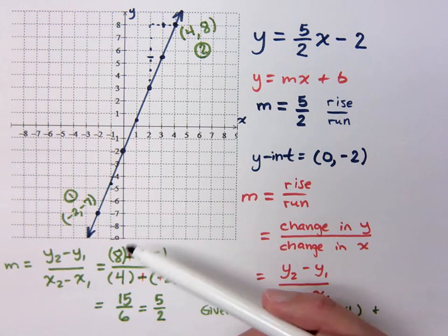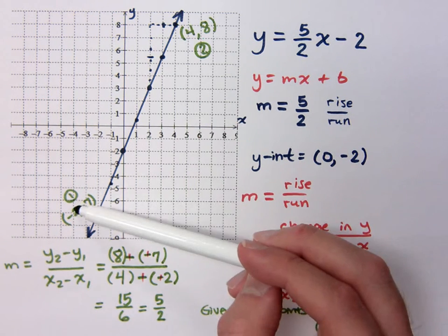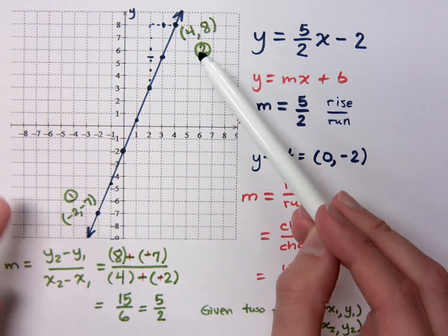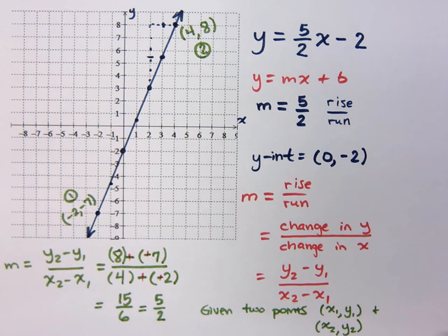Here's the thing. It wouldn't matter if I had said this was the second and that was the first point. It would still work out. The only difference you would see if you had flopped the order around is that you would have had negative 15 over negative 6. And then what would a negative over negative have been? So it would have been positive.